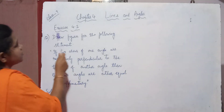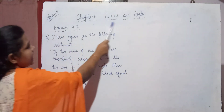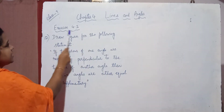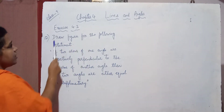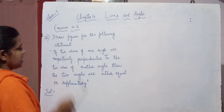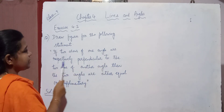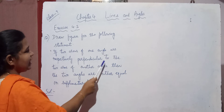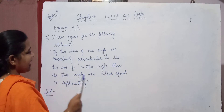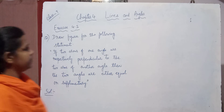Hello children. Today in 9th class, under the chapter Lines and Angles, which is your 4th chapter, in exercise 4.3, we are doing the 12th one. Draw figures for the following statement. The statement given is: if two arms of one angle are respectively perpendicular to the two arms of another angle, then the two angles are either equal or supplementary.